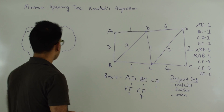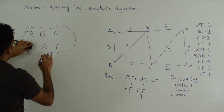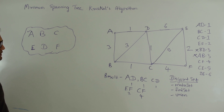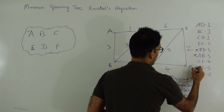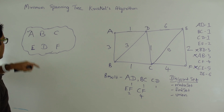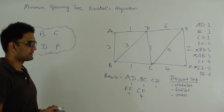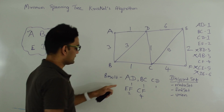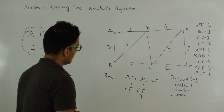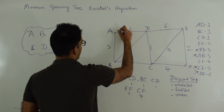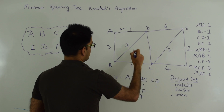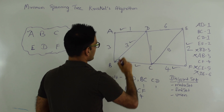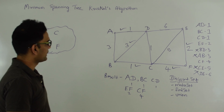Then we'll pick edge CE. C is represented by A and E is represented by A, telling us that they are in the same disjoint set. So we'll ignore CE. So the edges which form the minimum spanning tree for this graph are: AD, BC, CD, EF, and CF. These five edges together form the minimum spanning tree.